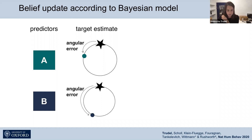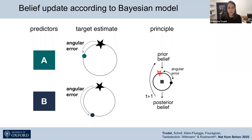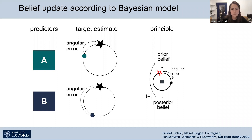In our experiment, we were interested in how participants form beliefs about how well each predictor estimates the target location — specifically, beliefs about the angular error associated with each predictor. To do this, we used a Bayesian model. The principle is that participants enter a trial with a prior belief — an expectation of how well each predictor would perform if selected. Once they select a predictor, they make an observation defined by the angular error, and can update the prior belief, resulting in a posterior belief, which then serves as the prior belief on the next encounter.